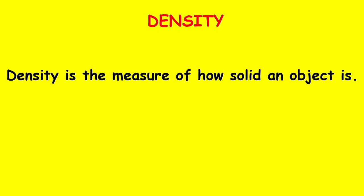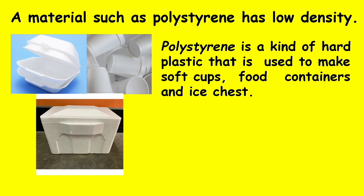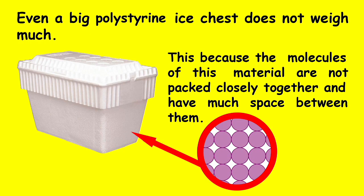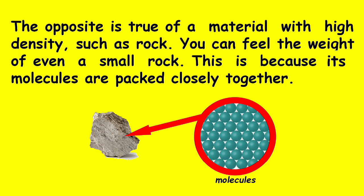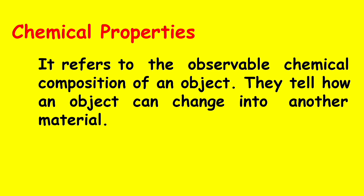Density is the measure of how solid an object is. A material such as polystyrene has low density. Polystyrene is a kind of hard plastic used to make cups, food containers, and ice chests. Even a big polystyrene ice chest does not weigh much, because the molecules of this material are not packed closely together and have much space between them. The opposite is true of a material with high density such as a rock — you can feel the weight of even a small rock because its molecules are packed closely together.